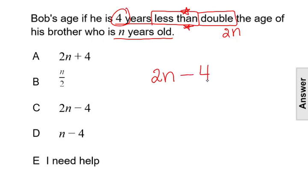That is saying double the age of his brother - Bob is four years less than double the age. The whole idea is when you see 'less than,' you have to switch that order of the four and the 2n. The 2n has to come first.